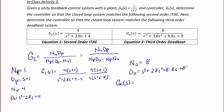The controller Gc(s) is equal to N0·Dp, which is 8 times (s plus 1), over the denominator Np·D0 minus Np·N0, which is s³ plus 3.8s² plus 8.8s minus 8.